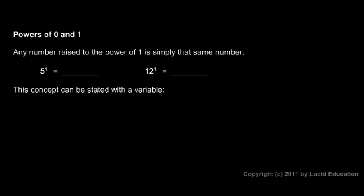Now we will talk about powers of 0 and 1. Any number raised to the power of 1 is simply that number. So 5 to the power of 1 is simply 5, and 12 to the power of 1 is simply 12. This idea can be stated mathematically with a variable.